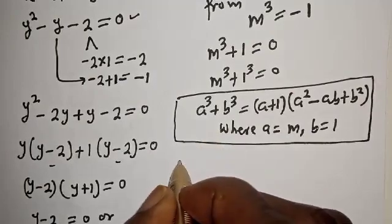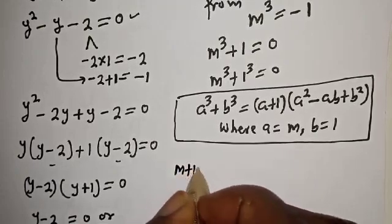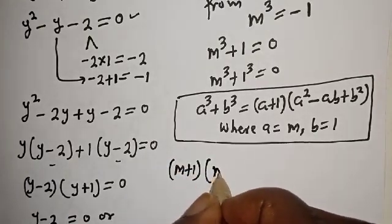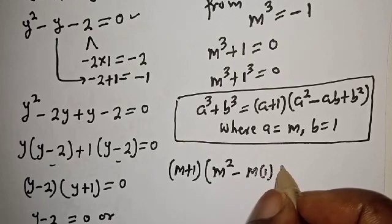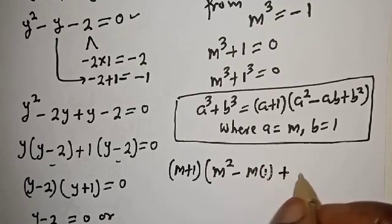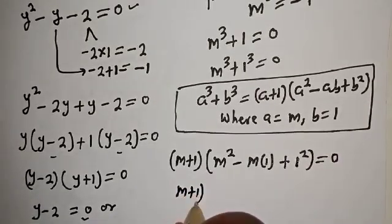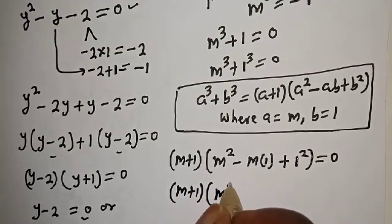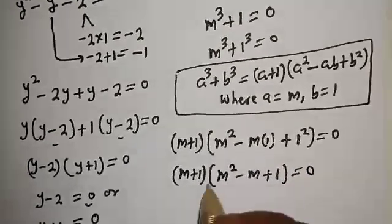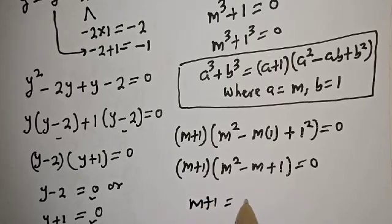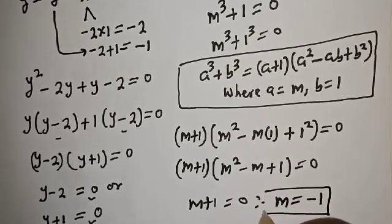Using the sum of cubes formula, where A is equal to m and B is equal to 1, this gives us m plus 1, bracket m squared minus m multiplied by 1, plus 1 squared, is equal to 0. So m plus 1 multiplied by m squared minus m plus 1 is equal to 0.